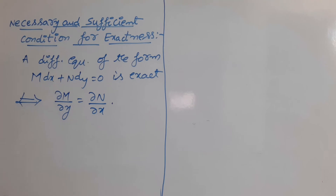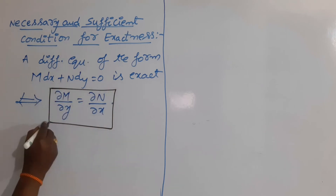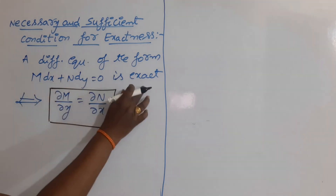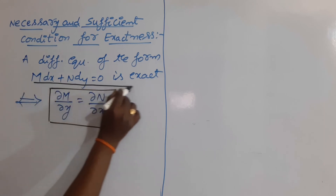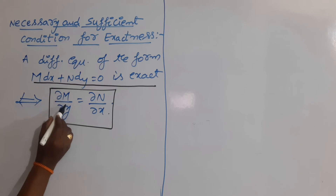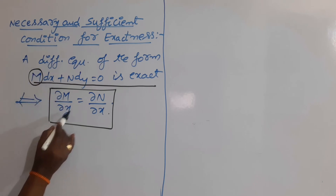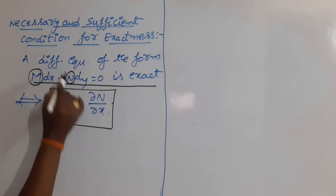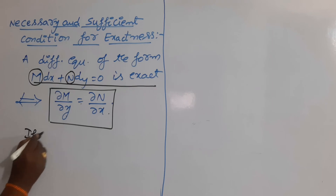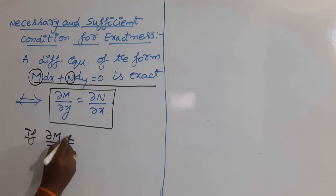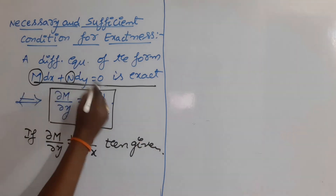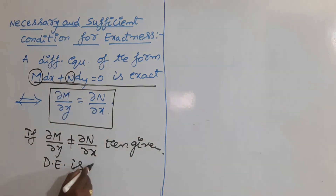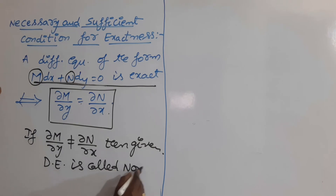Practically, we can use this condition to check whether a given differential equation is exact or not. This is very, very important — don't forget. If M dx plus N dy = 0 is exact, then ∂M/∂y = ∂N/∂x. Conversely, if ∂M/∂y = ∂N/∂x, then M dx plus N dy = 0 is exact. In other words, the partial differentiation of M with respect to y should equal the partial differentiation of N with respect to x. If ∂M/∂y is not equal to ∂N/∂x, then the given differential equation is said to be non-exact.